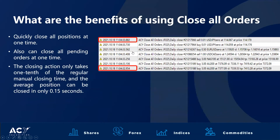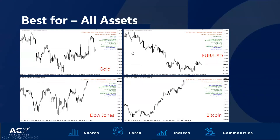What are the benefits of using Close All Orders? Well, firstly, it's going to enable you to close all orders in a timely manner. It also allows you to close all pending orders at the same time, and the closing action only takes one tenth of the regular manual closing time — the average position can be closed in only 0.15 seconds. This function may be used across all assets and all tradable instruments on the ACY Securities platform.